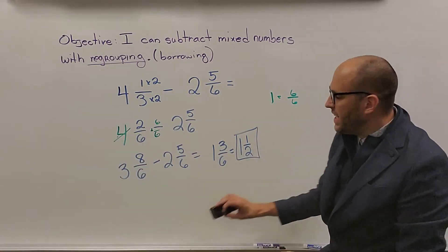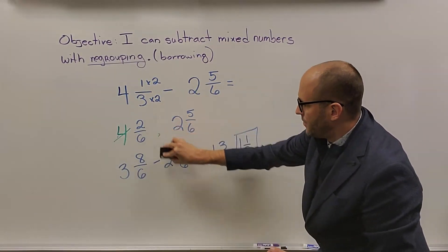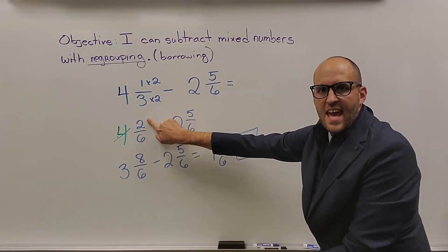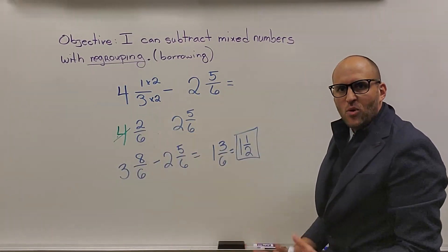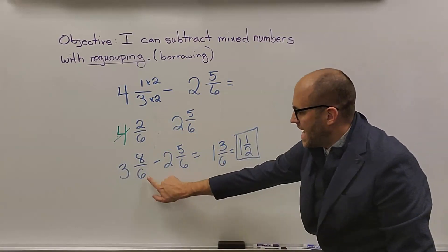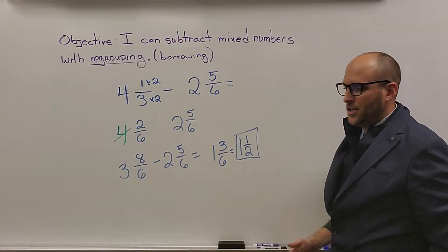Now an easy way to remember this is when you're borrowing, you take your denominator and add it to the numerator. 6 plus 2 is 8 and that will get you your new numerator. Denominator stays the same. So that's the easiest way for me to explain it shorthand how to do it.